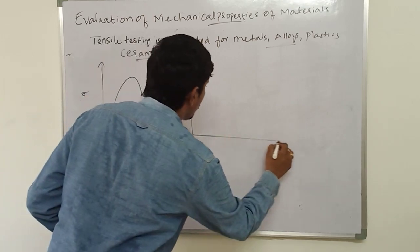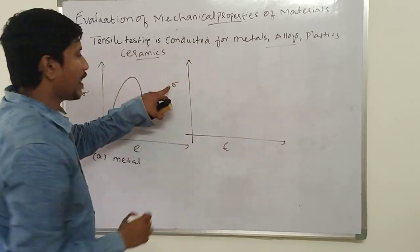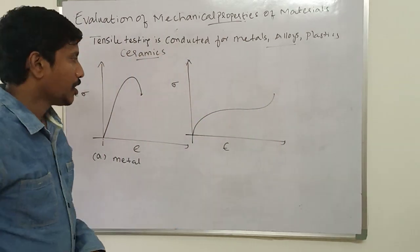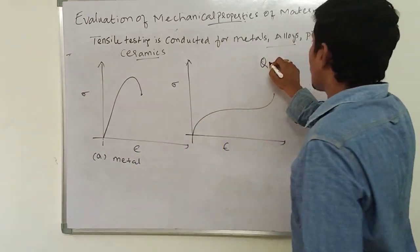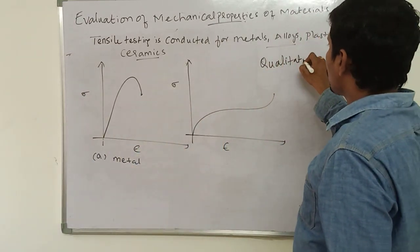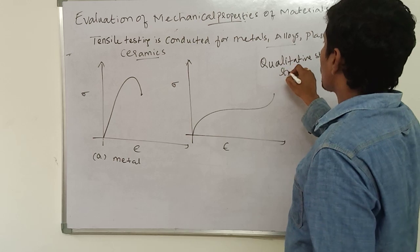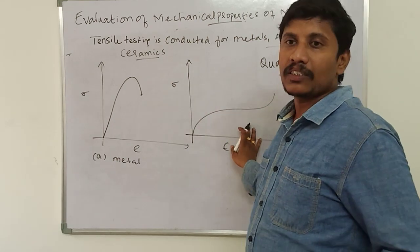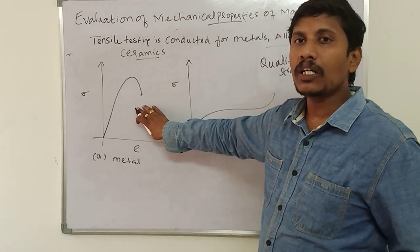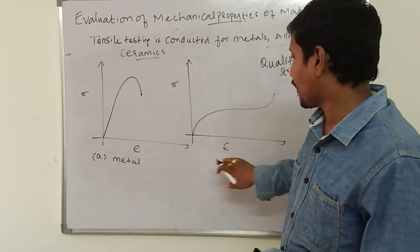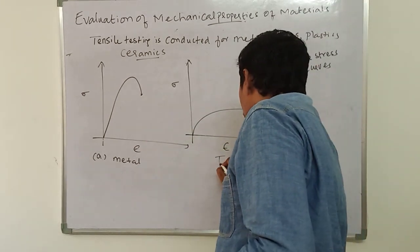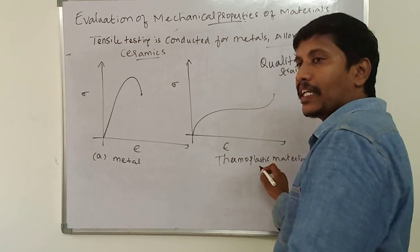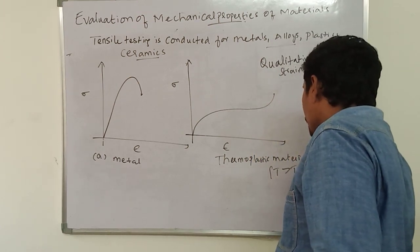For a thermoplastic material, with stress on the y-axis and strain on the x-axis, a typical stress-strain curve looks like this. These two curves are shown on different scales, just to illustrate how they look for a metal and a thermoplastic material. The thermoplastic test is generally taken at a temperature more than the glass transition temperature.